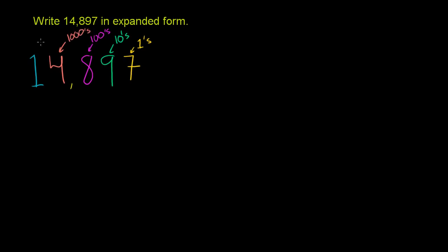And then the 1 is in the 10,000's place. And you see, every time you move to the left, you move 1 place to the left, you're multiplying by 10. 1's place, 10's place, 100's place, 1,000's place, 10,000's place. Now let's think about what that really means.